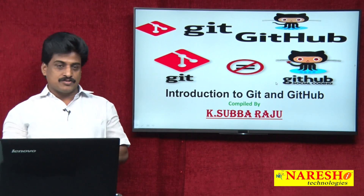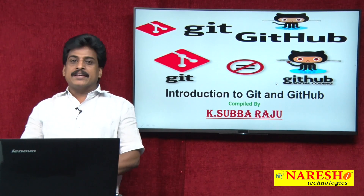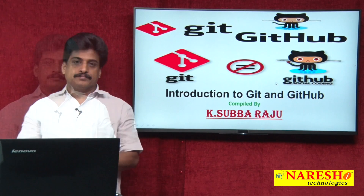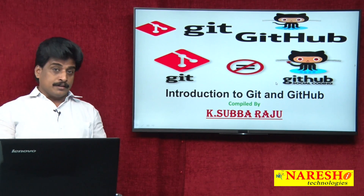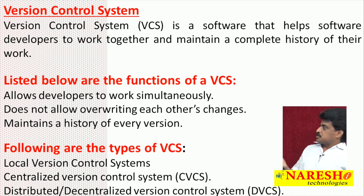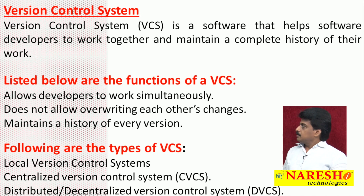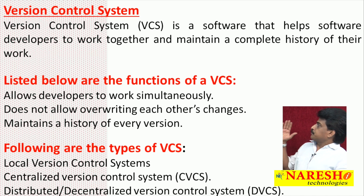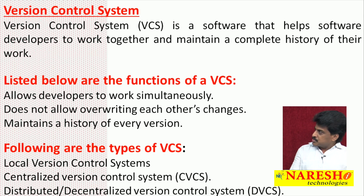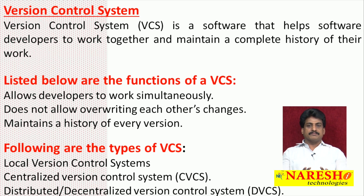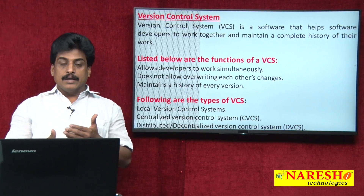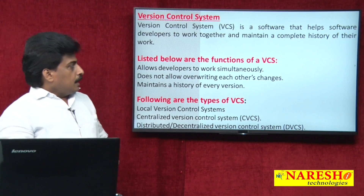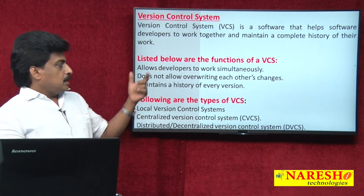First, let's see what Git is and what a Version Control System (VCS) is in the software industry. A Version Control System is a software that helps software developers work together and maintain a complete history of their work, tracking every modification and update with a new version.